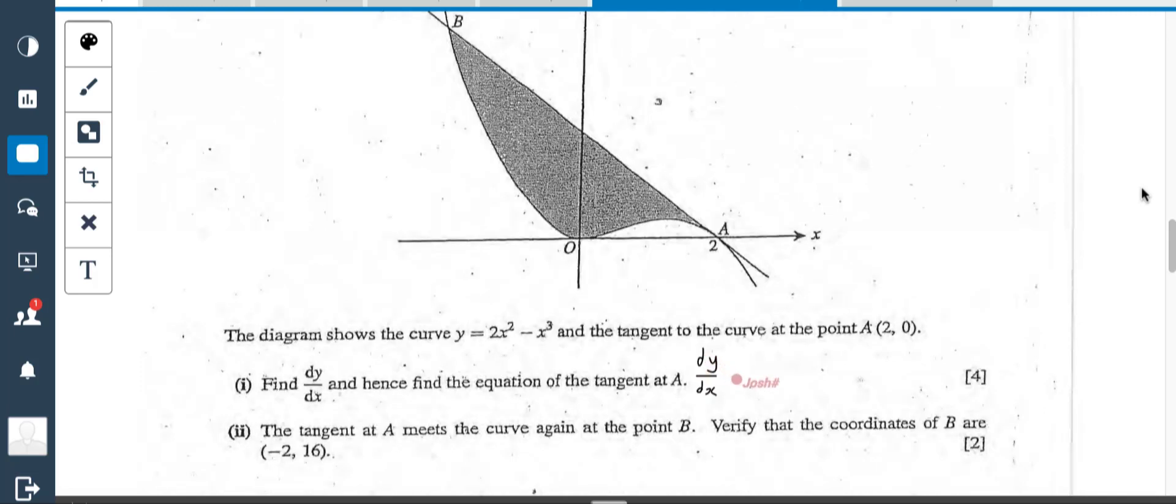dy over dx equals, and then I'm going to take the two down, so 4x directly to the 1 minus 3x squared. Perfect.